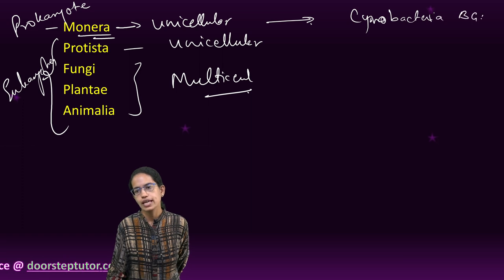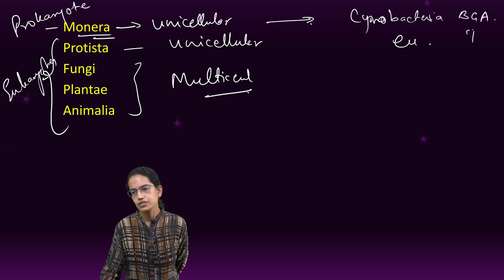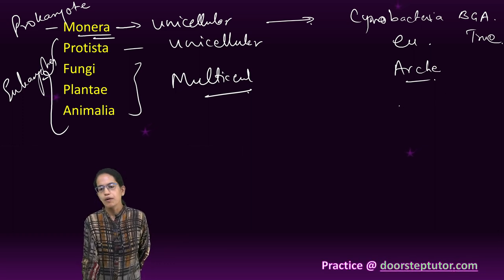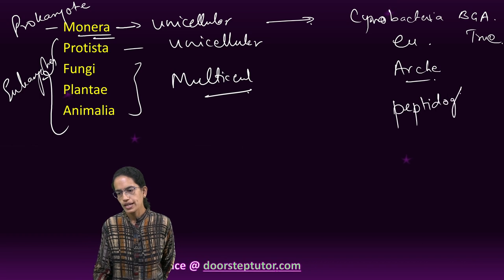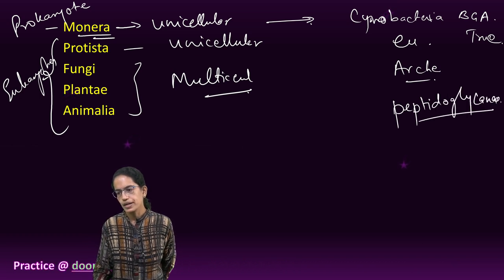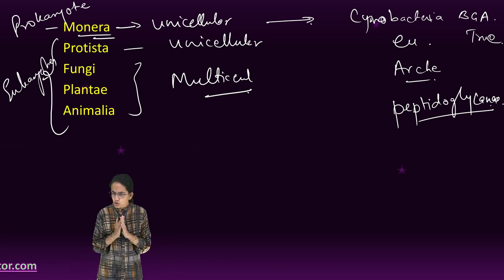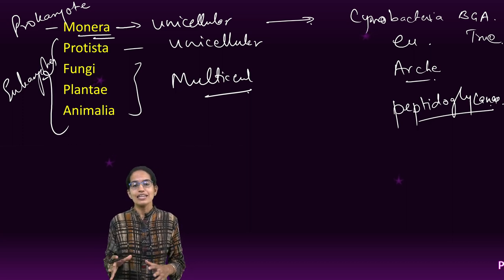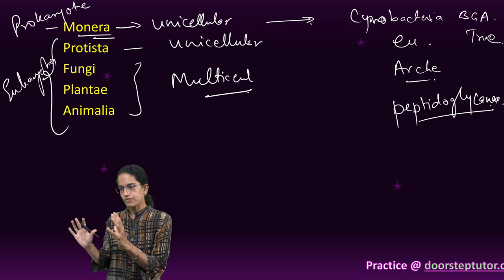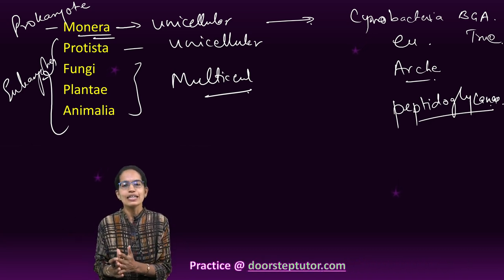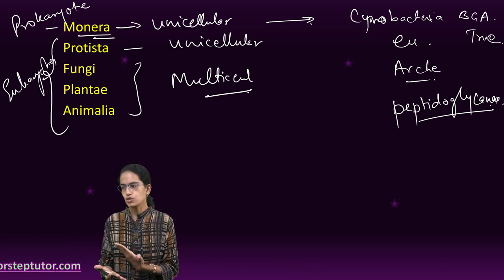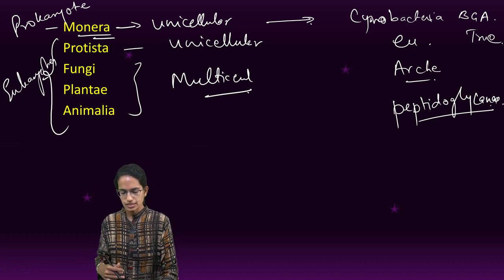Under Monera, we have cyanobacteria (blue-green algae), eubacteria (true bacteria), and archibacteria (ancient bacteria). All of them comprise peptidoglycan and polysaccharides. There is no internal compartmentalization, and the DNA is without histones, so the nucleus is not well defined. Reproduction in Monera is absent as meiosis — only budding or fusion occurs.